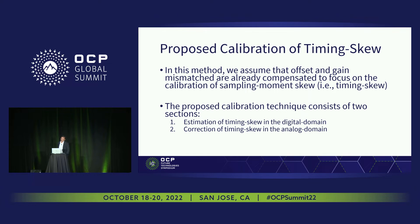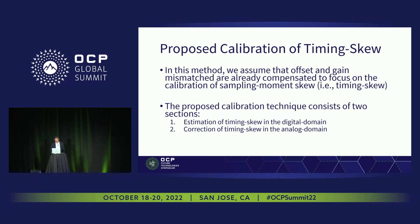We assume that gain and offset are easily calibrated, and then the timing skew is estimated in the digital domain. In this implementation it is corrected in the analog domain, but it can also be corrected in the digital domain.